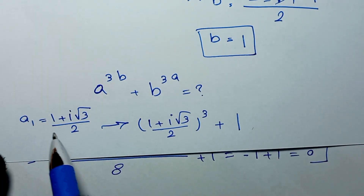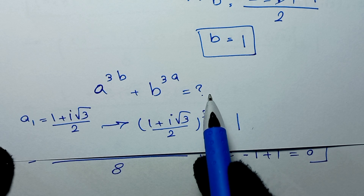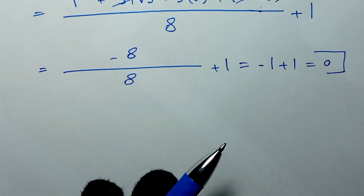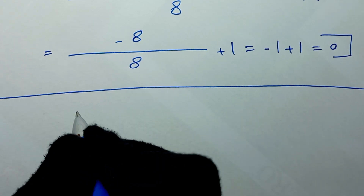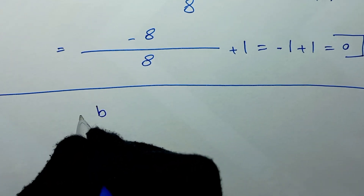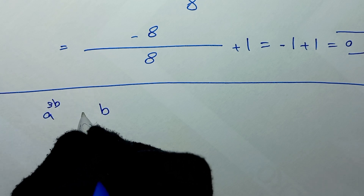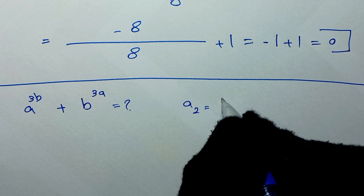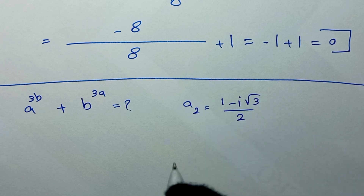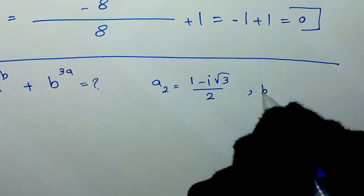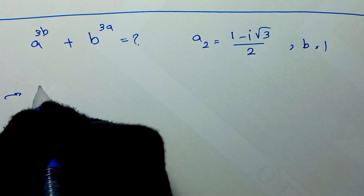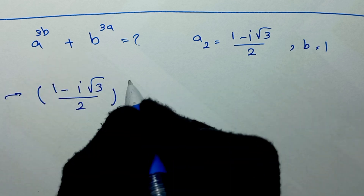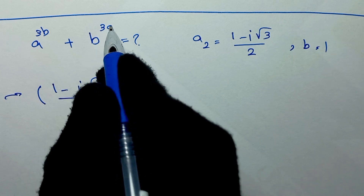For a₁ our answer is zero. Now we substitute a₂, which is one minus i square root of three over two. Our expression is a to the power of 3b plus b to the power of 3a. For a₂: one minus i square root of three over two, raised to the power of 3b — since b equals one, 3b is three — plus one to the power of 3a, which is one.